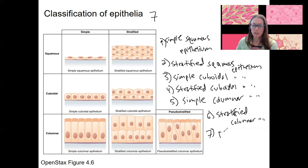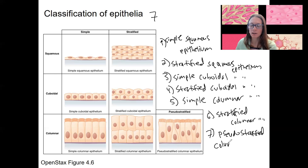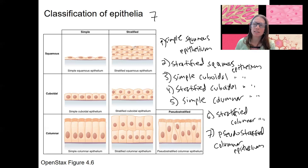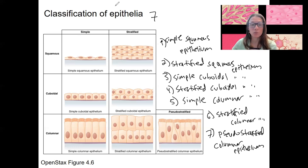The last type here is pseudostratified. It looks stratified but it's not. Pseudostratified columnar — because the cells are columnar-shaped — is found in the trachea and other respiratory passageways. There's one more type called transitional, located in the bladder. It's stretchy. These are the seven types to remember.